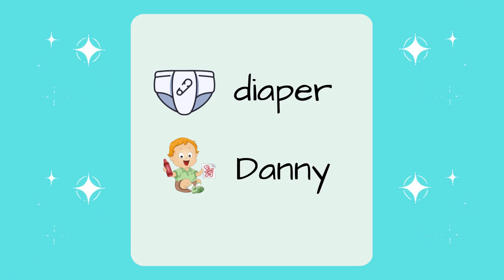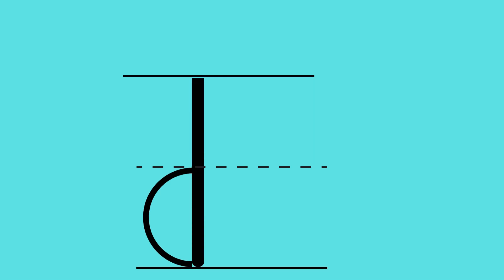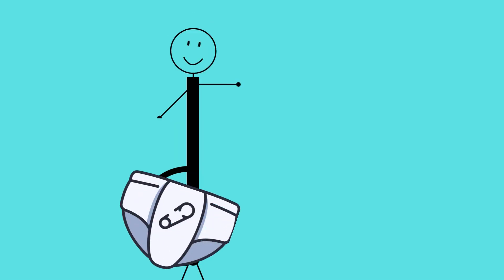For the letter D, we are going to draw that diaper first. And how do we draw that diaper? We are actually going to draw a magic C first. So we are going to draw a magic C to a D. And the line here represents Danny. Here is the diaper on Danny. Awesome job.